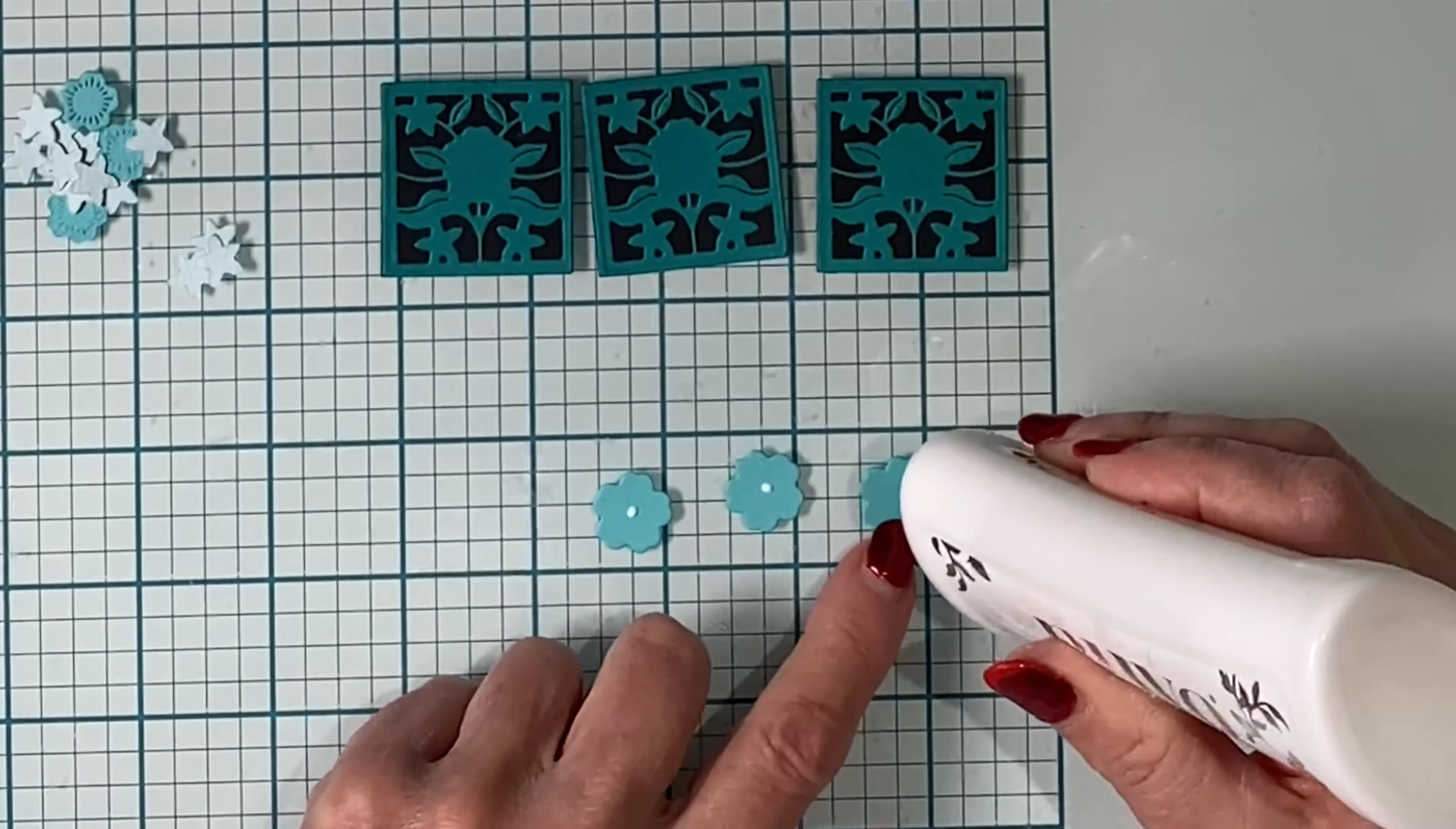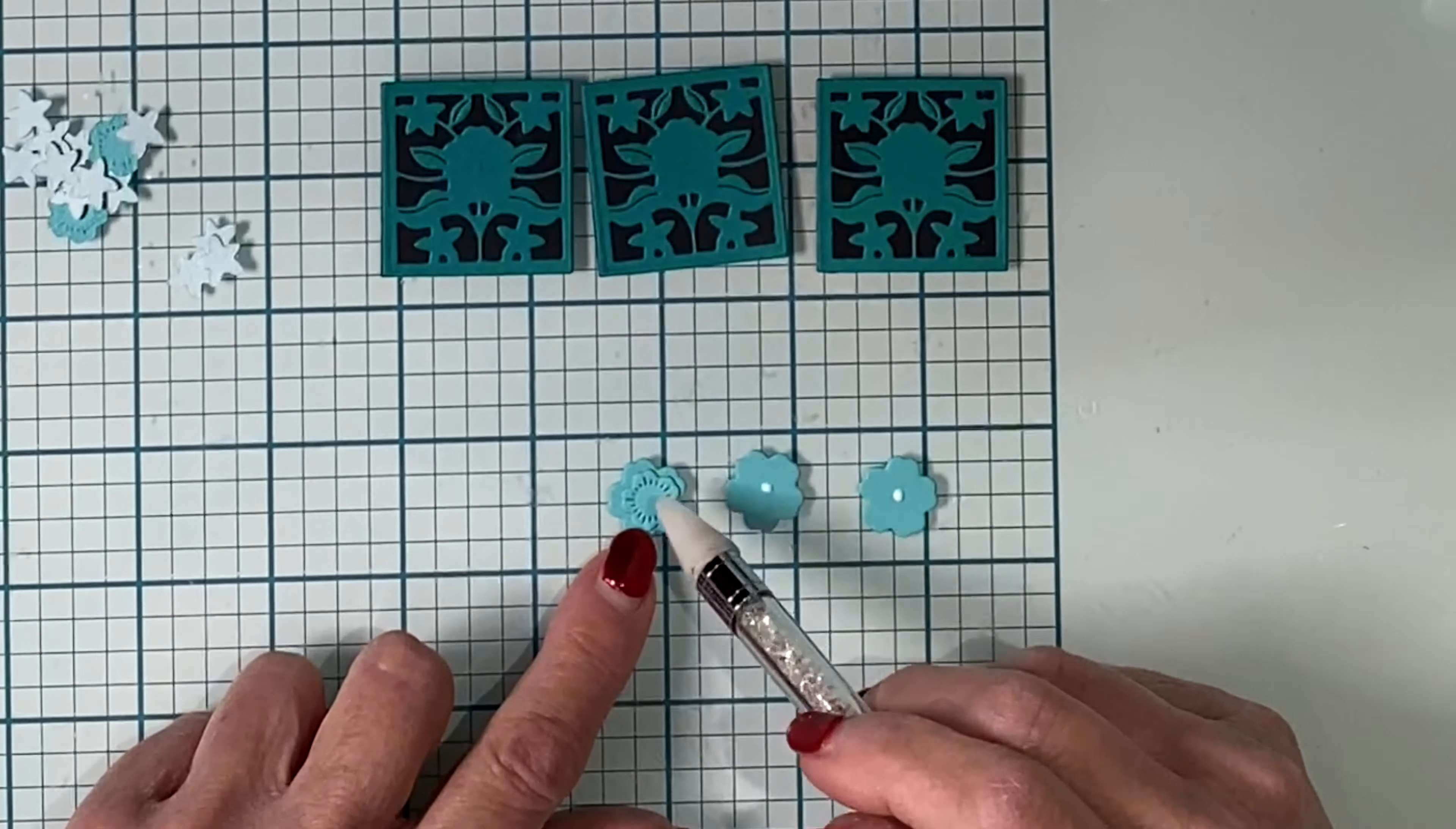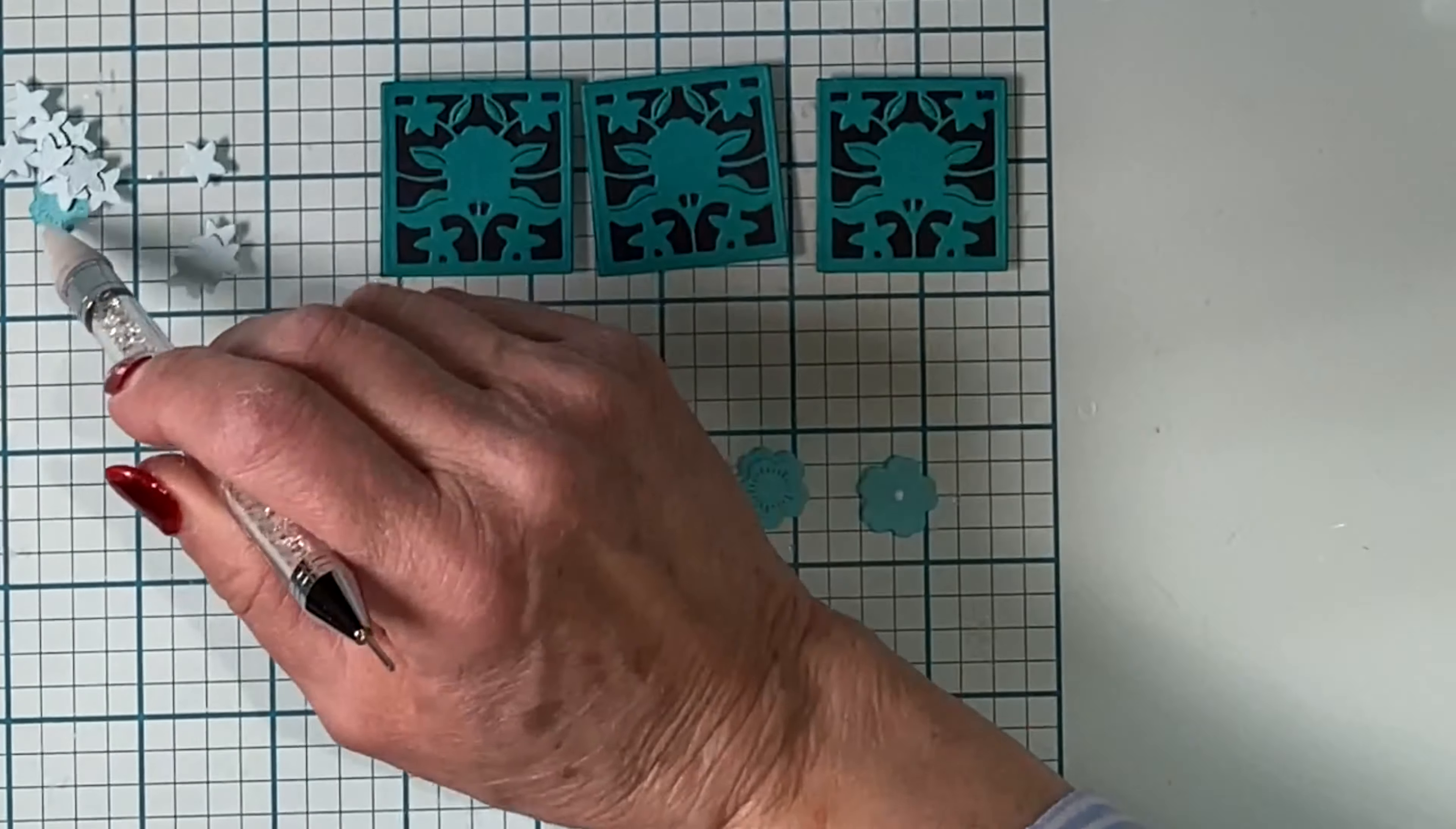The main flower has two layers and was die cut from blue cardstock. After glue has been dotted on the base layer, I can use my jewel picker and pop the second layer into position.